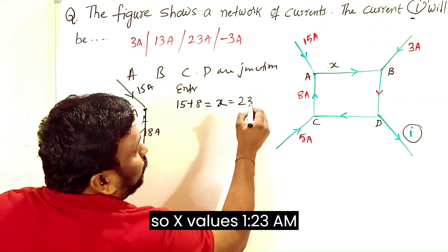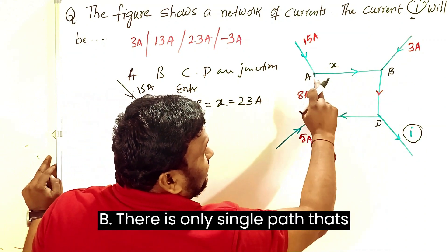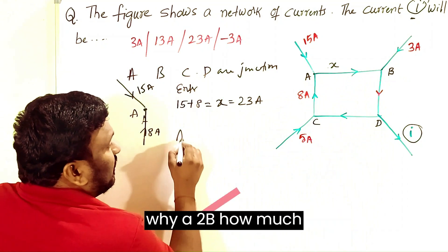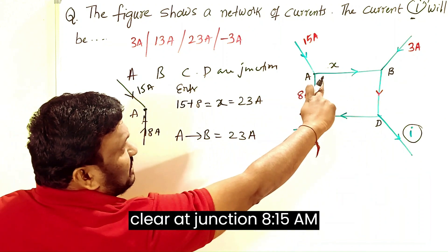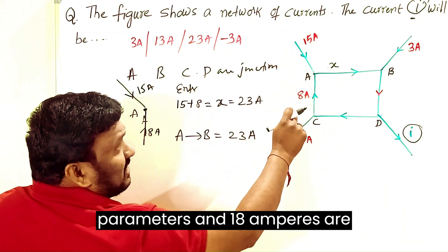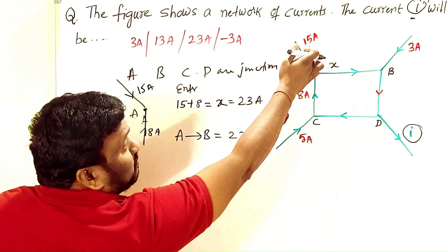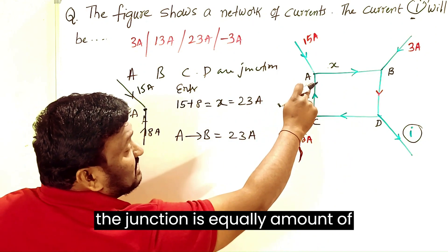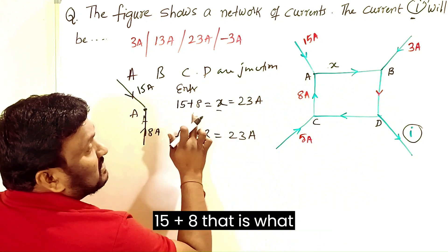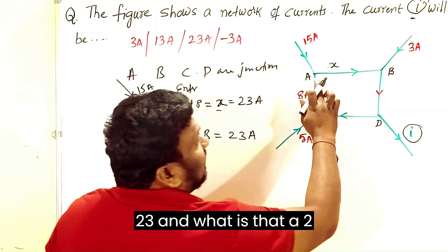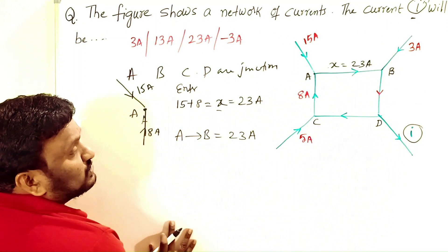From A to B there is only a single path, so the amount of current going from A to B is 23 amperes. According to Kirchhoff's law, the amount of currents entering the junction equals the amount leaving. X is leaving at A, so X equals 15 plus 8, which is 23 amperes, and 23 amperes is going from A to B.